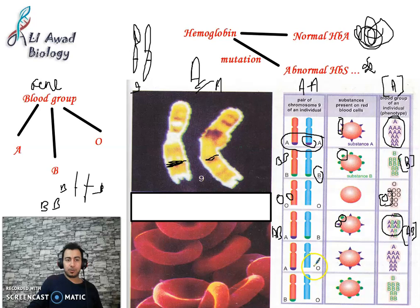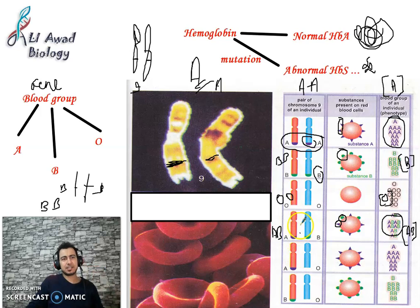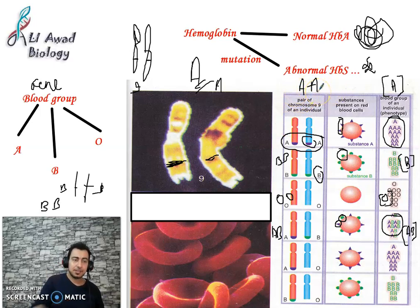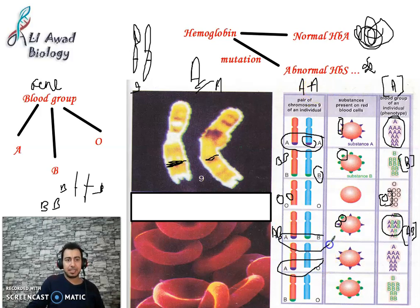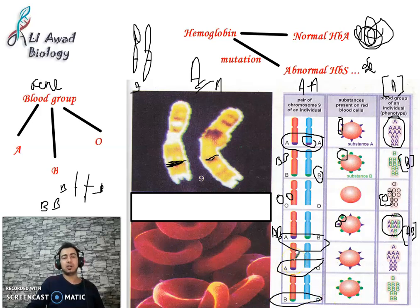There are also genotypes AO and BO. When the two alleles of the same gene are identical — such as AA, BB, or OO — this is called homozygous or pure. When they are different — such as AO, AB, or BO — this is called heterozygous or hybrid. See you in the next video.